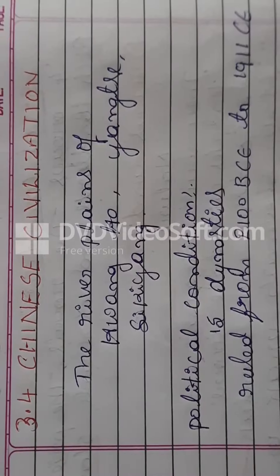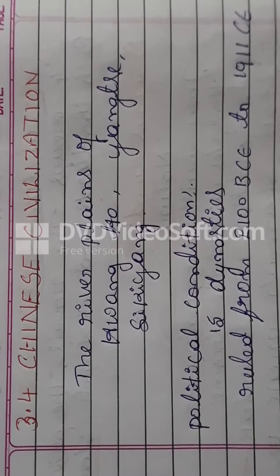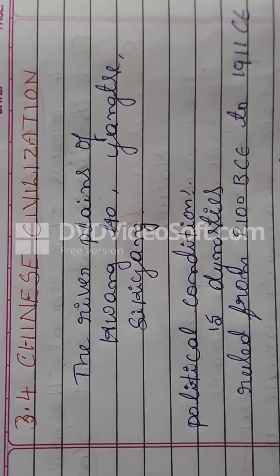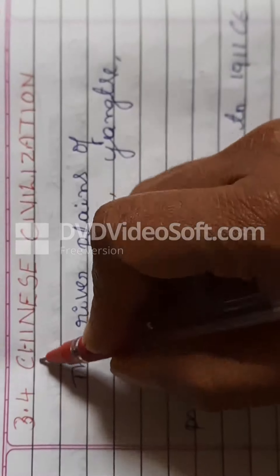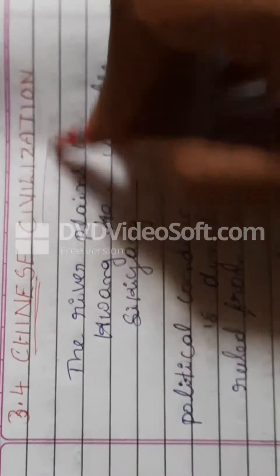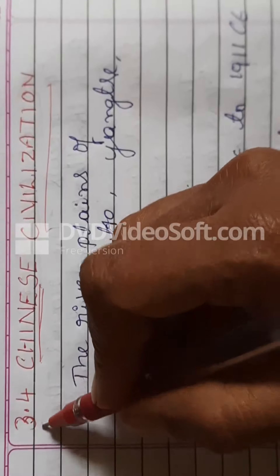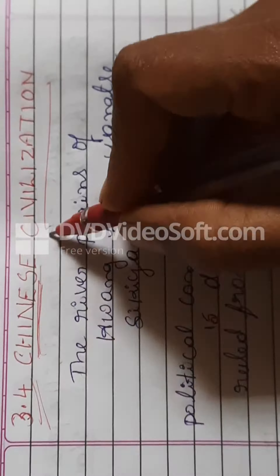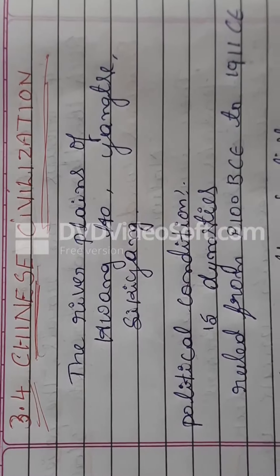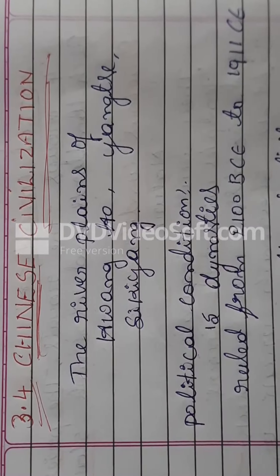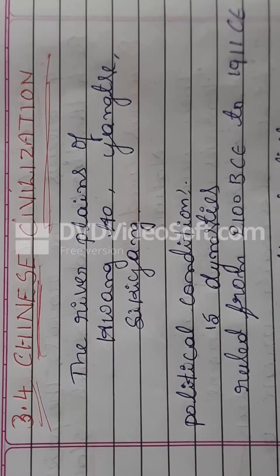Good morning, my dear students. In the last class I explained the Mesopotamian civilization. Now I will explain the new topic: Chinese civilization, Chapter 3.4. We will look at where these civilizations were located, what are the political conditions, economic and social conditions of Chinese civilization, and what are the main contributions in art and architecture.